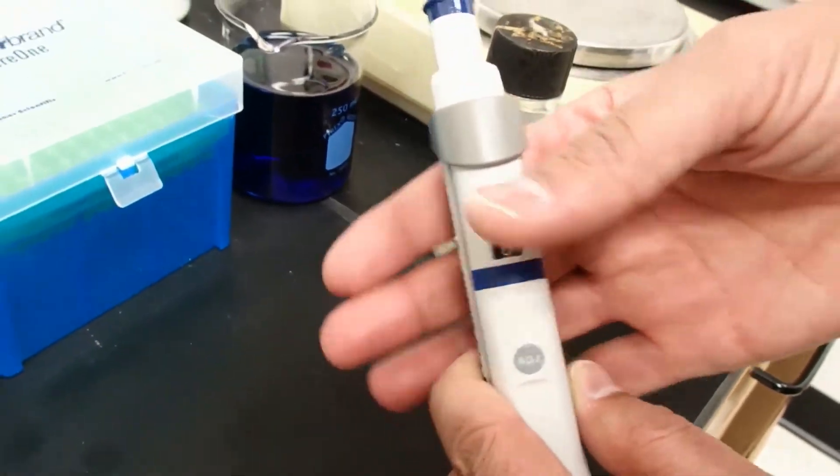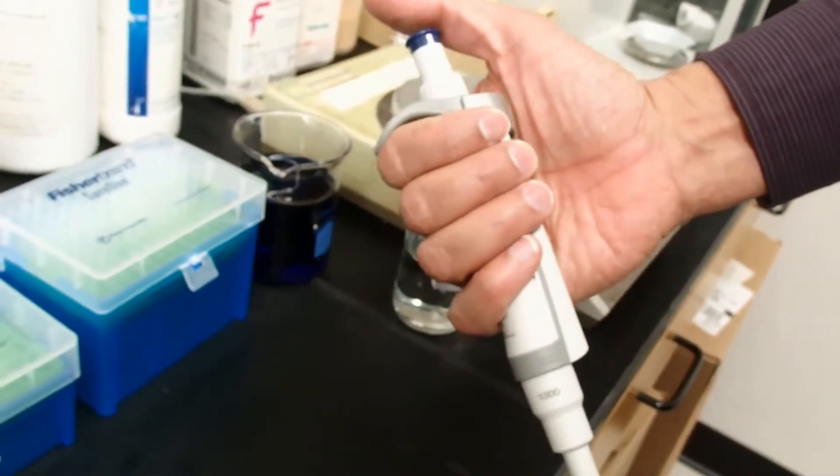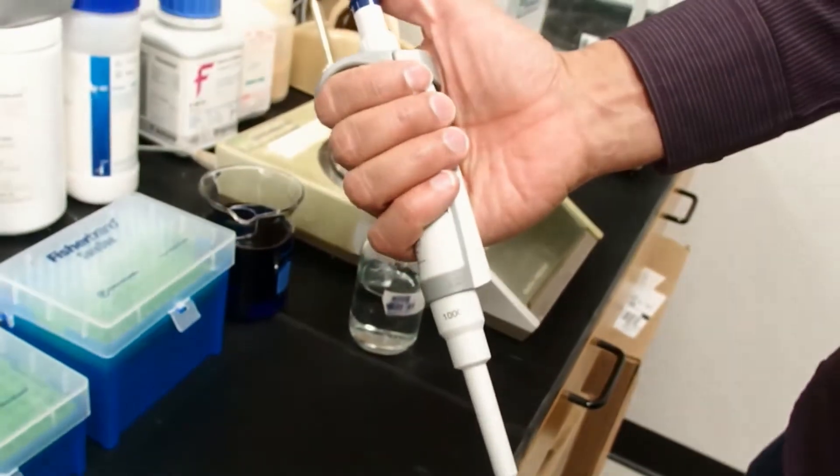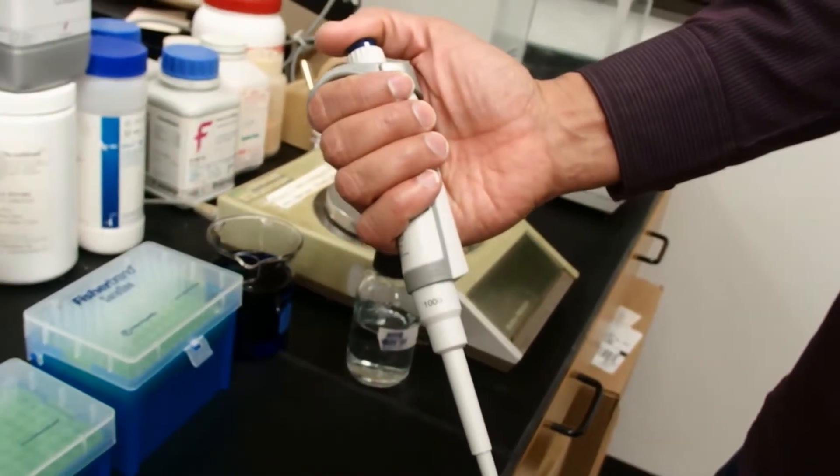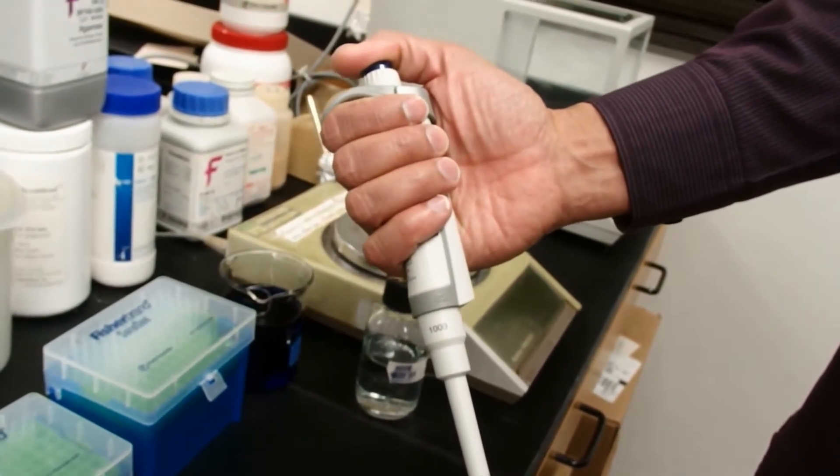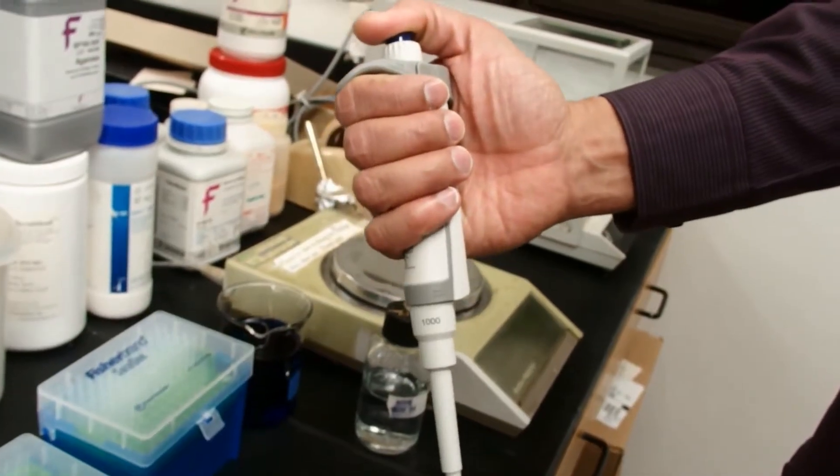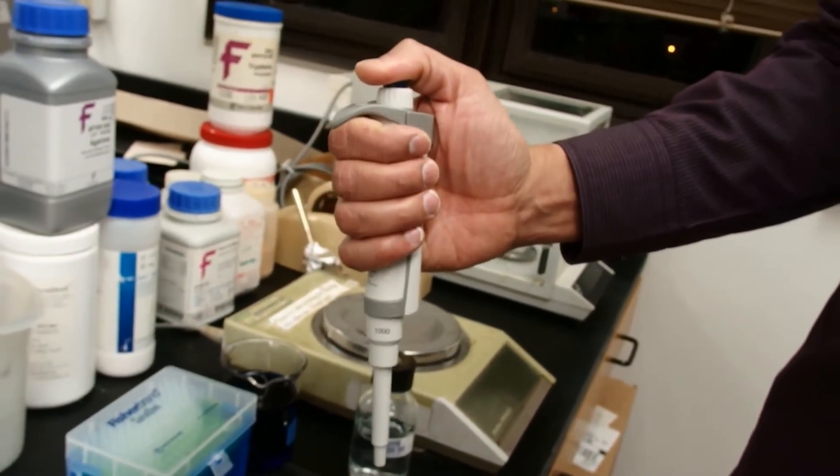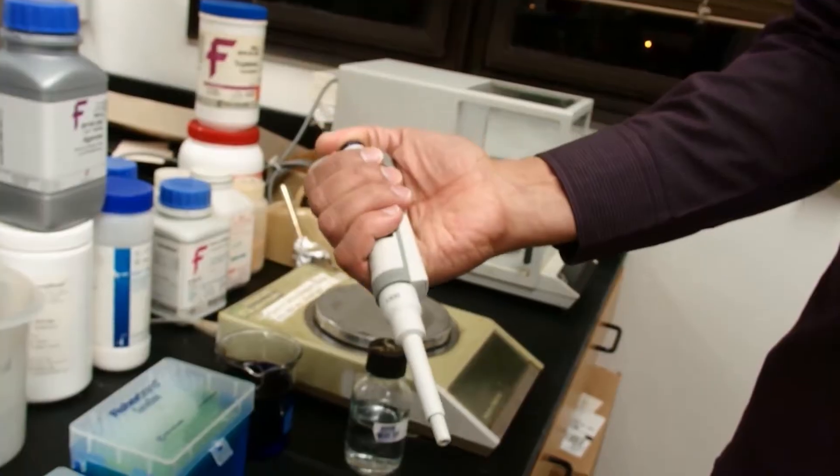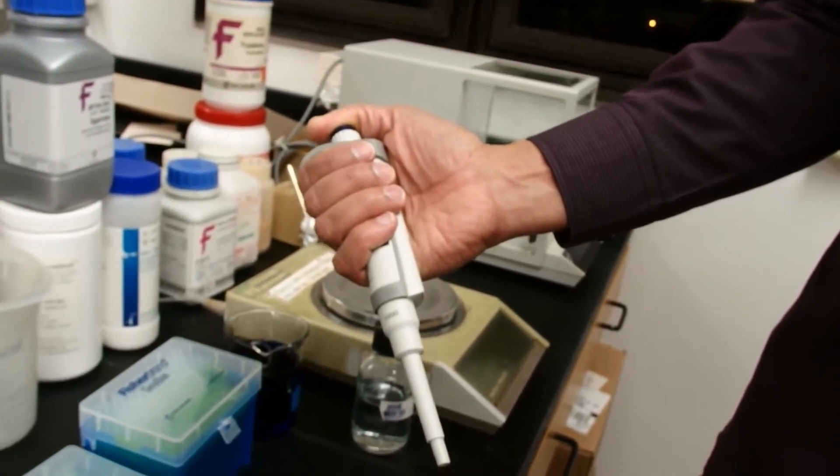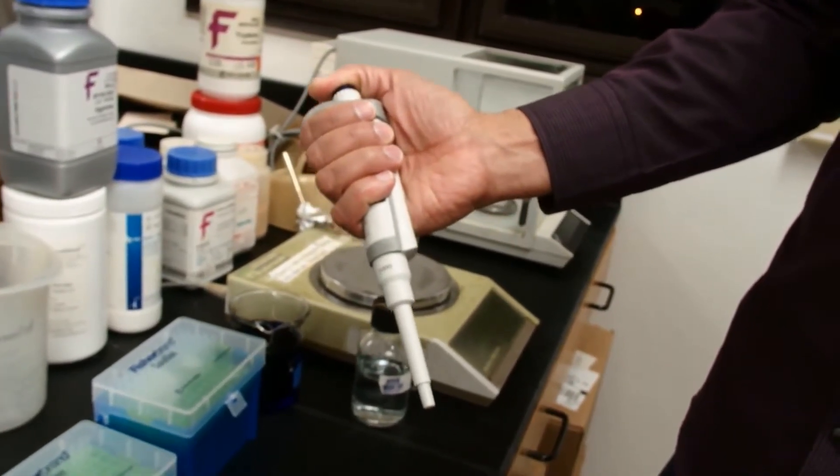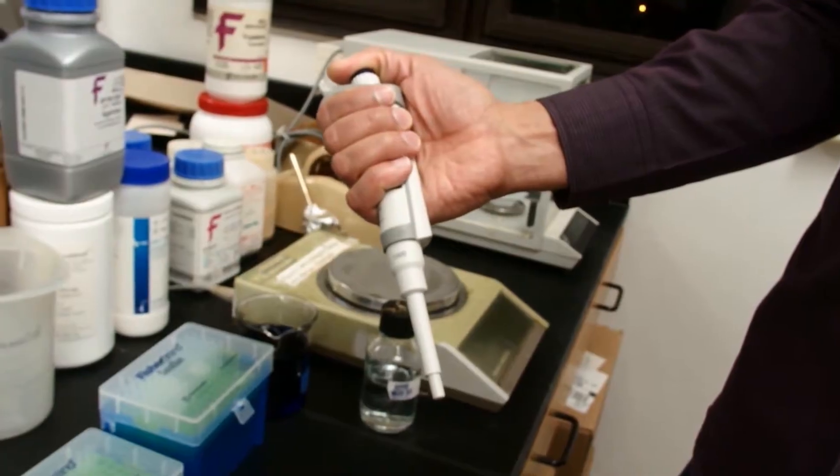Other parts of the pipette are the plunger. This plunger is pressed in until you feel resistance, and that will determine how much volume you pick up. Then it has a second stop. If you press harder, you'll be able to blow out residual liquid in the tip.